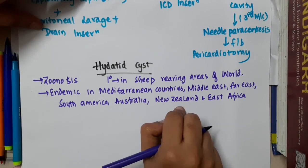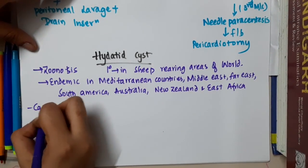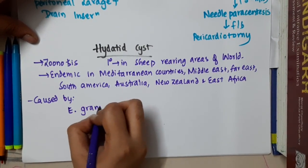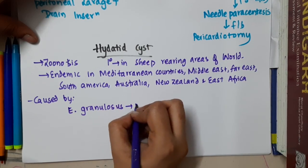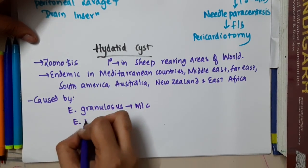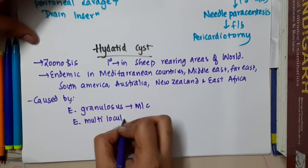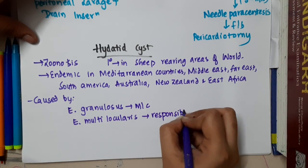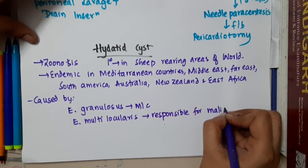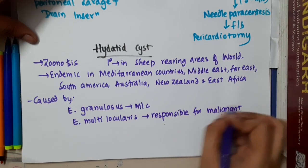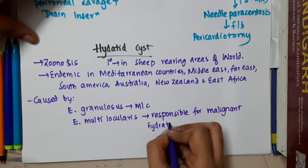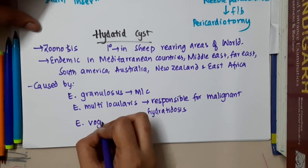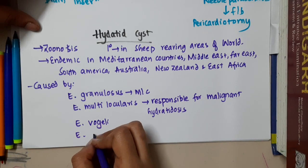Hydatid disease is endemic in Mediterranean countries, Middle East, Far East, South America, Australia, New Zealand, and East Africa. It is caused by Echinococcus granulosus, which is the most common cause, and also by Echinococcus multilocularis, which is responsible for malignant hydatidosis.